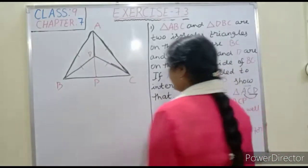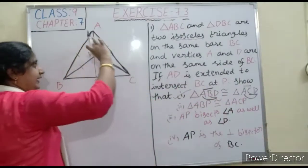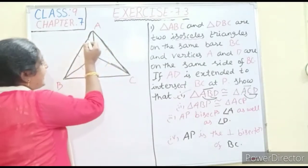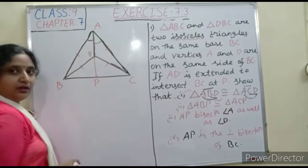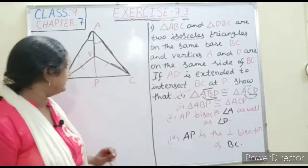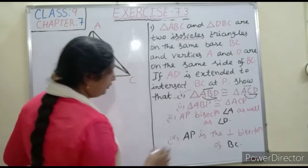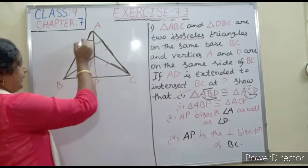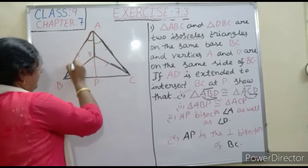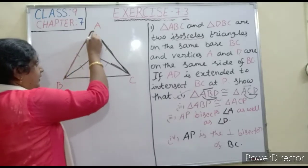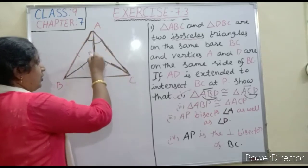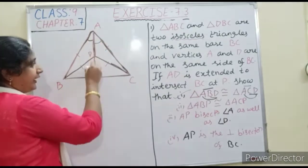Since triangle ABD is congruent to triangle ACD, the corresponding angles at B and C are equal. Now we come to proving triangle ABP congruent to triangle ACP — that is this whole big triangle ABP and triangle ACP.